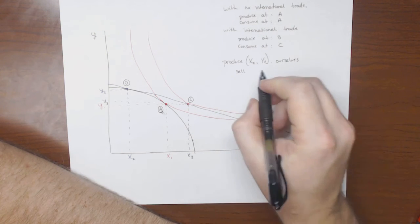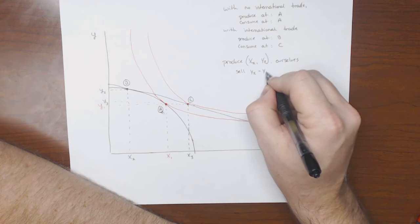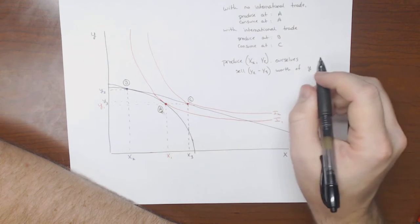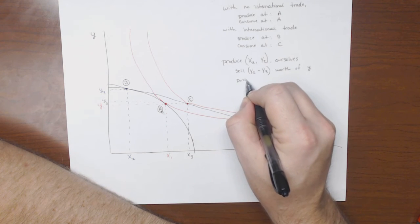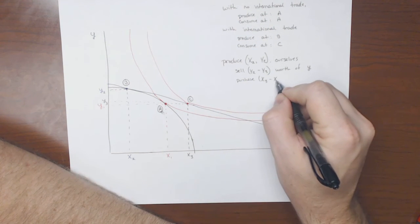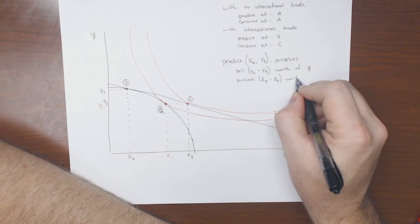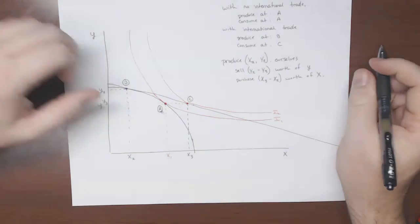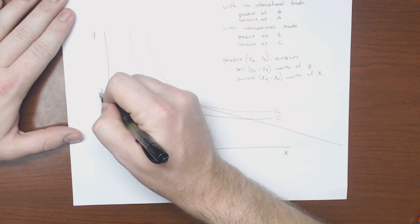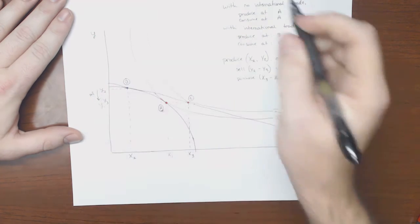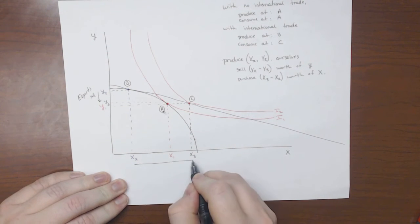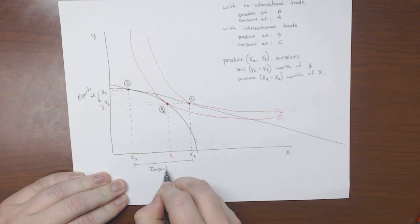We will sell Y2 minus Y3 worth of Y, and this will purchase X3, which is where we end up, minus X2, which is where we started, worth of X. Or since we're talking about international trade, check this out. If we are selling this much, then this must be exports, and this distance here is what we end up importing. Right?